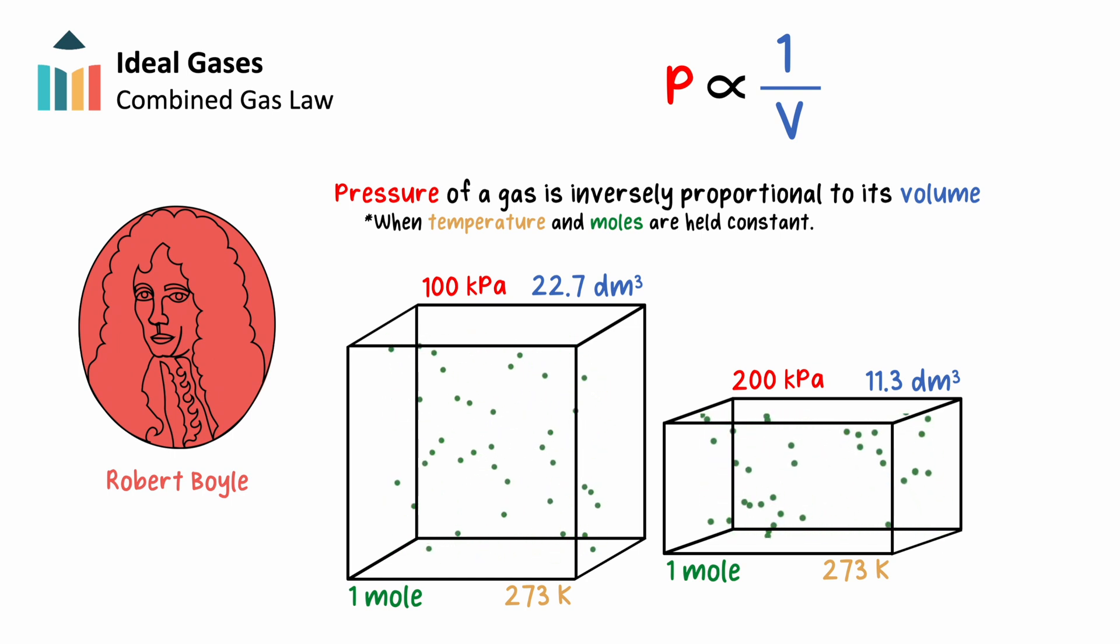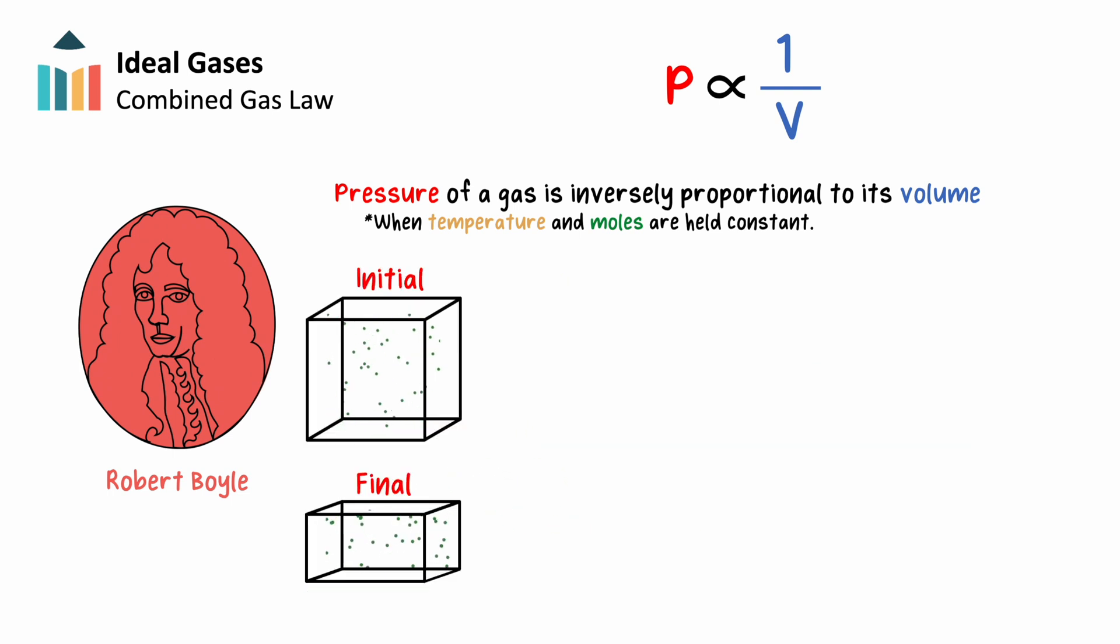We can derive the equation for this relationship using the ideal gas law. Consider a gas whose container has changed volume. We can use the ideal gas law to define this gas in its initial and final conditions. Remember that, for this example, temperature and moles must be held constant. This means that between these conditions, only pressure and volume are changing, which we'll mark as p1 and v1 for the initial conditions, and p2 and v2 for the final conditions. Notice that although these variables have changed, they're both equal to the same constants, nRT. So if p1 times v1 equals nRT and p2 times v2 equals nRT, then p1 times v1 and p2 times v2 must equal each other.